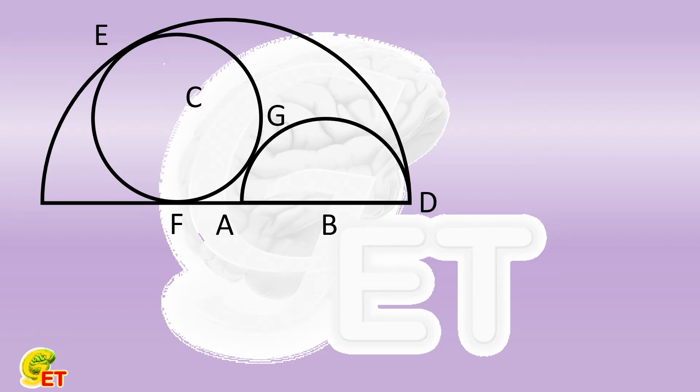We connect the centers A and C and further extend it. It must pass the tangent point E. The line connecting centers B and C must pass through the tangent point G. We connect C and F. So CF is perpendicular to FB. And CF is equal to half of CB.